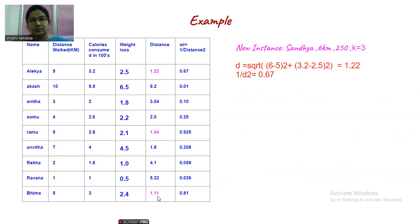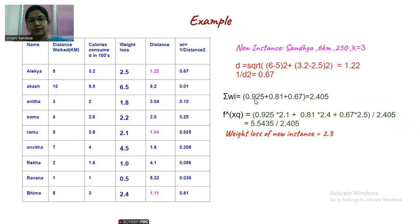So now, what we have to do is, for simplicity, first let us sum the weights associated with this. So let's calculate sigma wi, which is 0.925 plus 0.67 plus 0.81. So if you sum all these things, we are getting a value of 2.405.